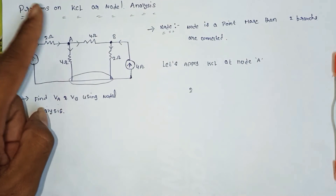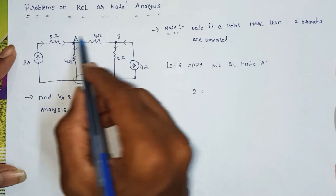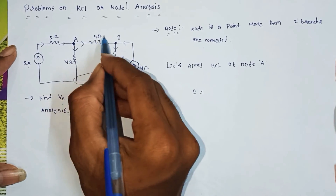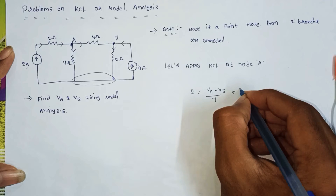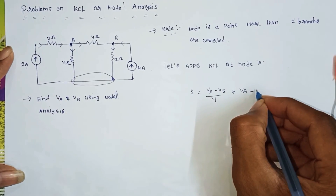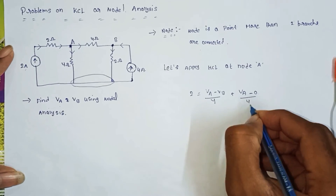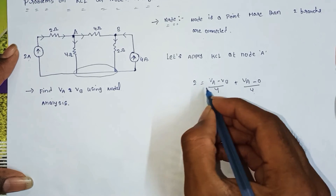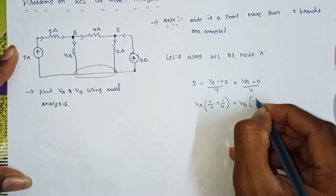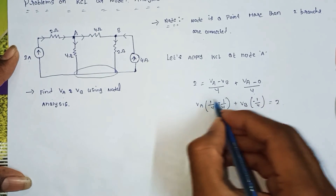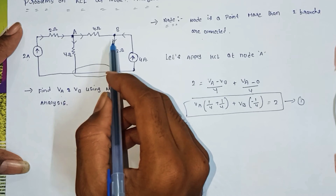The entering current equals 2, so we equate the leaving currents to 2. The leaving currents flow through the two 4-ohm resistors. We get: (VA minus VB) divided by 4, plus VA divided by 4, equals 2. Simplifying: VA times (1/4 plus 1/4) minus VB times (1/4) equals 2. This is equation 1.